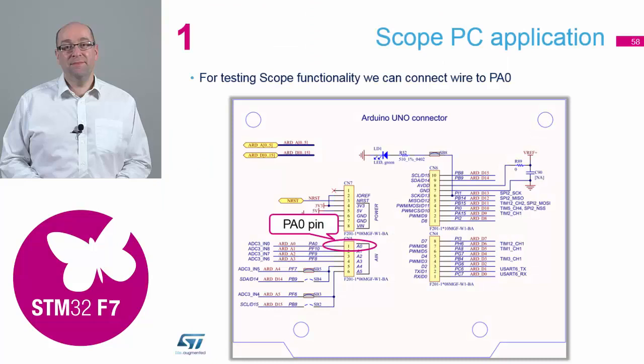We now need to attach something to our analogue input. The analogue input we are using is PA0, which is the top pin of the bottom left header on the underside of the board as shown in the diagram.